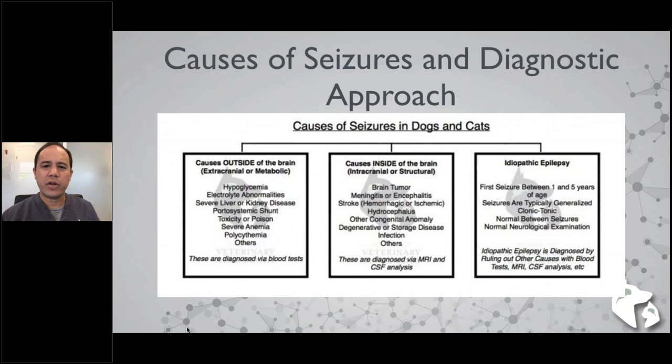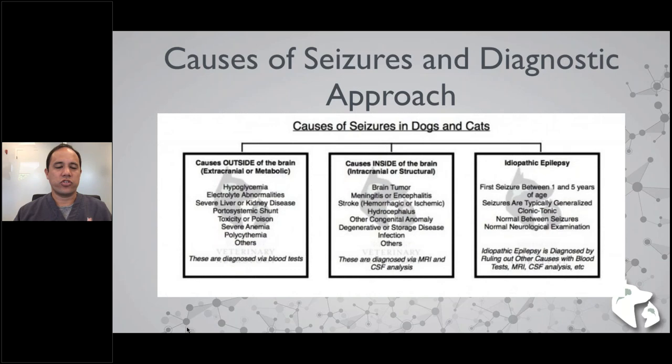The second broad category is something physically wrong inside the brain — intracranial or structural causes — including brain tumors, encephalitis, meningitis, strokes, malformations like hydrocephalus, and brain infections. These are best diagnosed with an MRI and possibly a spinal tap.